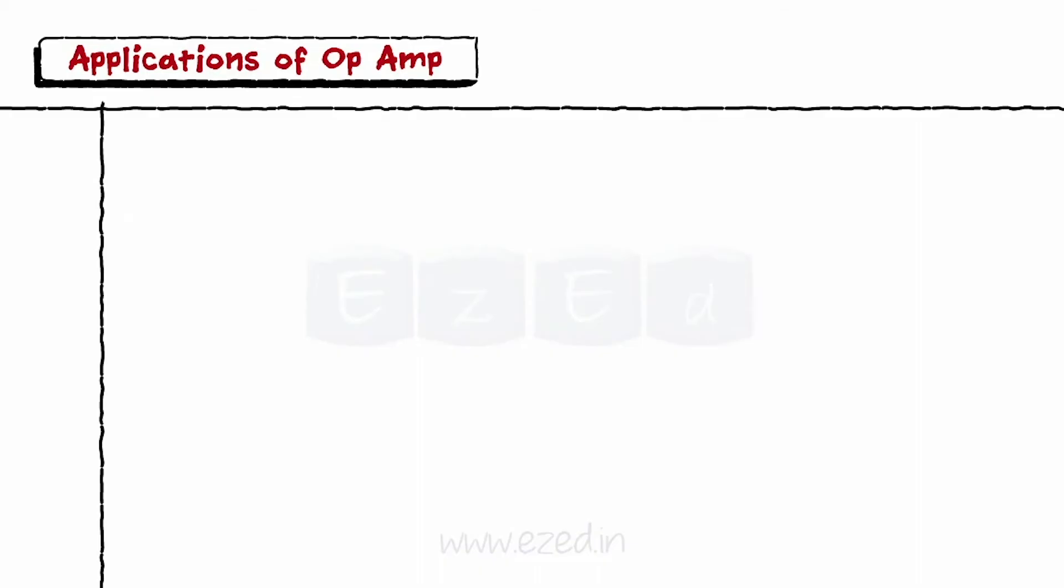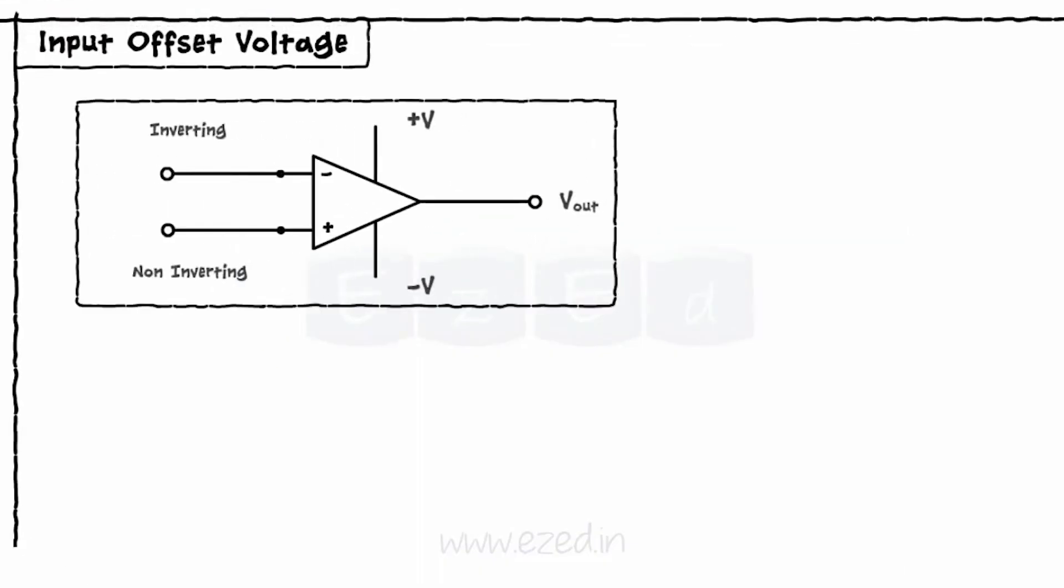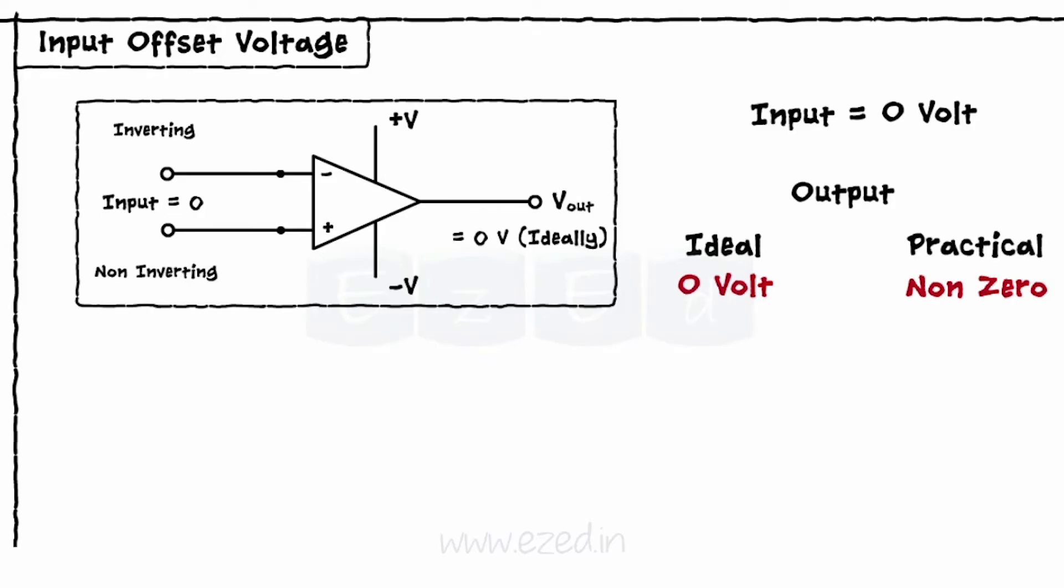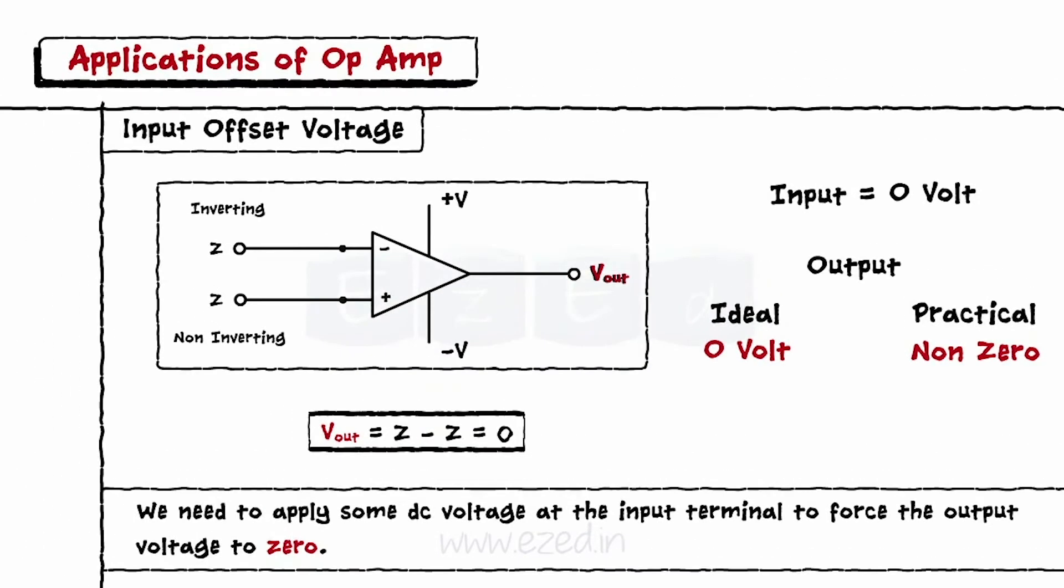The fourth term is input offset voltage. When input to an Op Amp is zero, the output should be zero ideally. But if it is not zero, we need to apply some DC voltage at the input terminal to force the output voltage to be zero. This applied voltage is called input offset voltage.